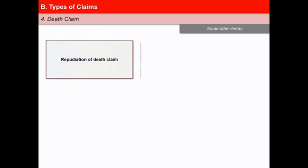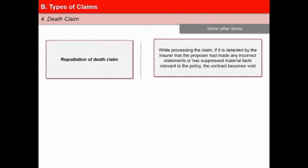Repudiation of death claim: the death claim may be paid or repudiated. While processing the claim, if it is detected by the insurer that the proposer has made any incorrect statements or has suppressed material facts relevant to the policy, the contract becomes void and all benefits under the policy are forfeited.